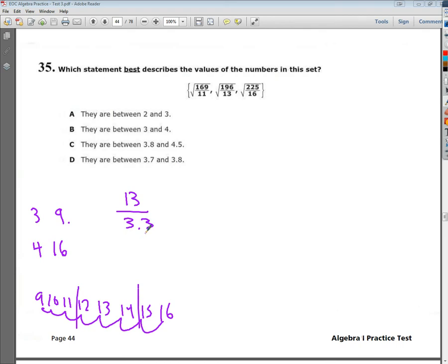For the square root of 196 over 13, I'm going to say the square root of 196 is 14. And the square root of 13, I'm going to say it's somewhere probably close to the middle, so maybe 3.5. And then on the other side, the square root of 225 is 15, divided by the square root of 16, which is 4.